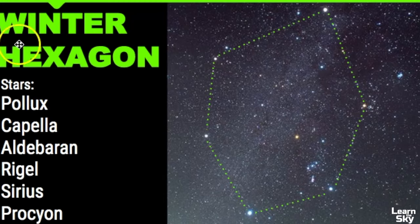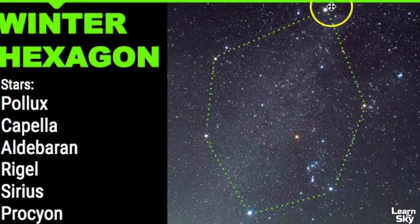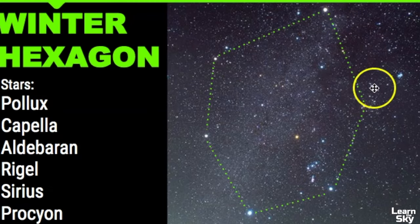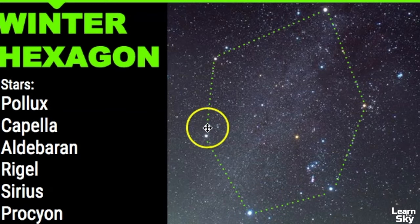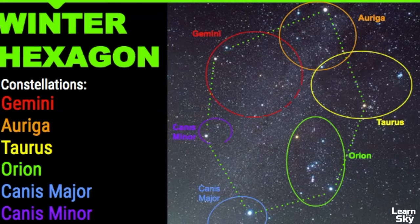The stars it connects include Pollux from Gemini, Capella in Auriga, Aldebaran in Taurus, Rigel in Orion, Sirius in Canis Major, and Procyon in Canis Minor. If we were to point out those constellations, that's the general area of where they're located.